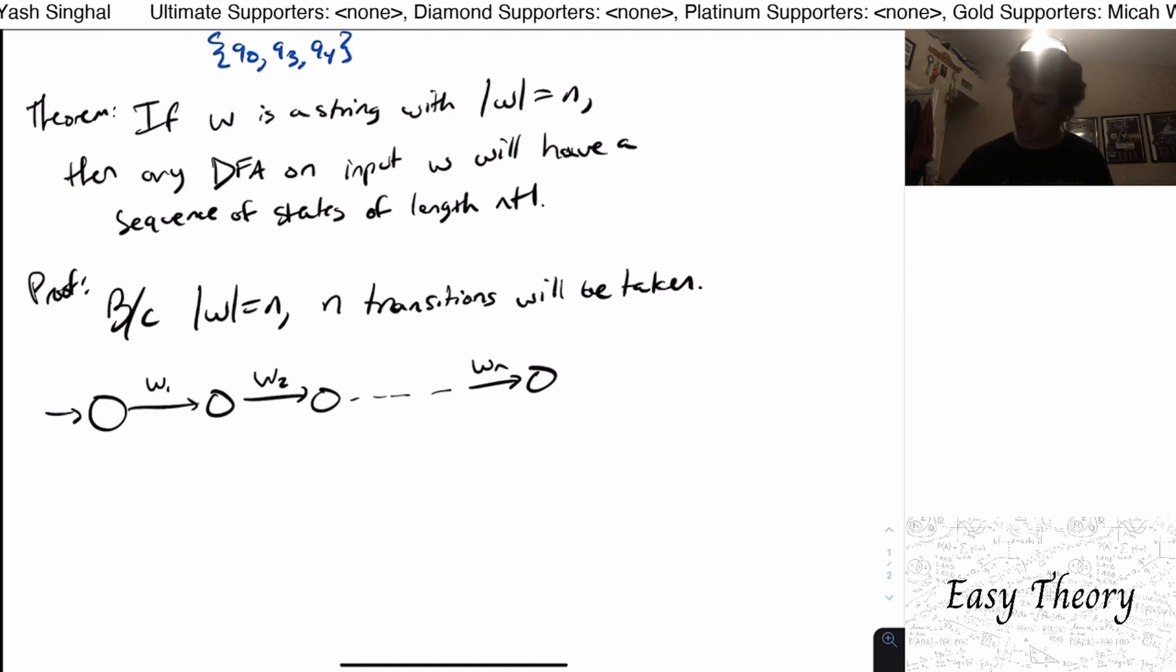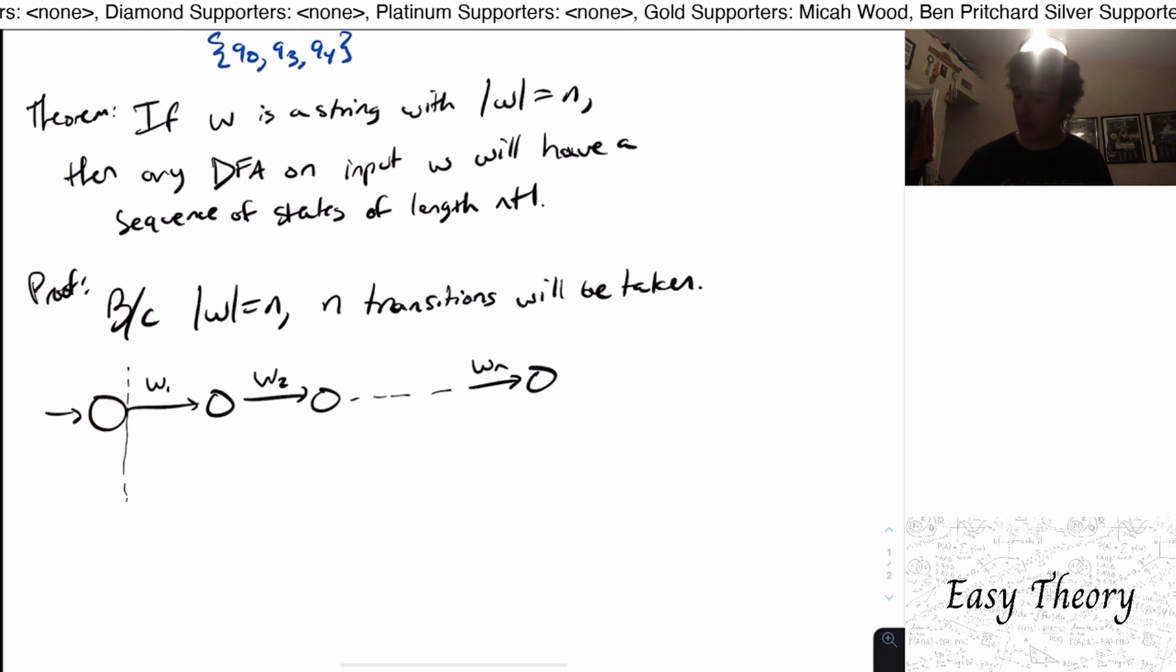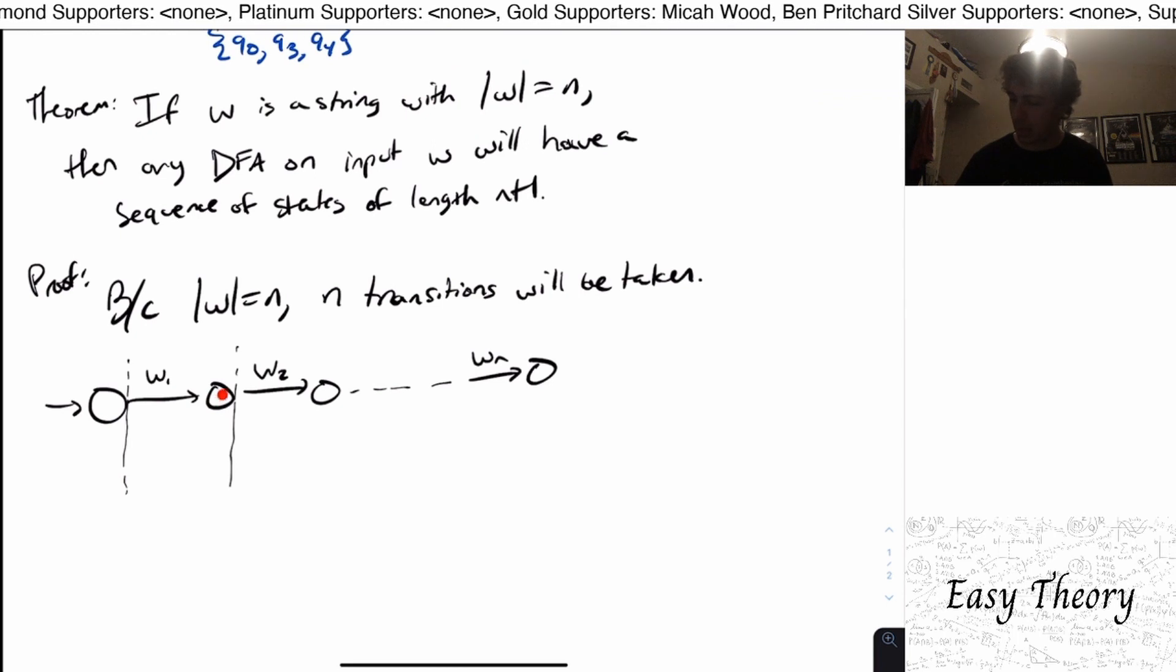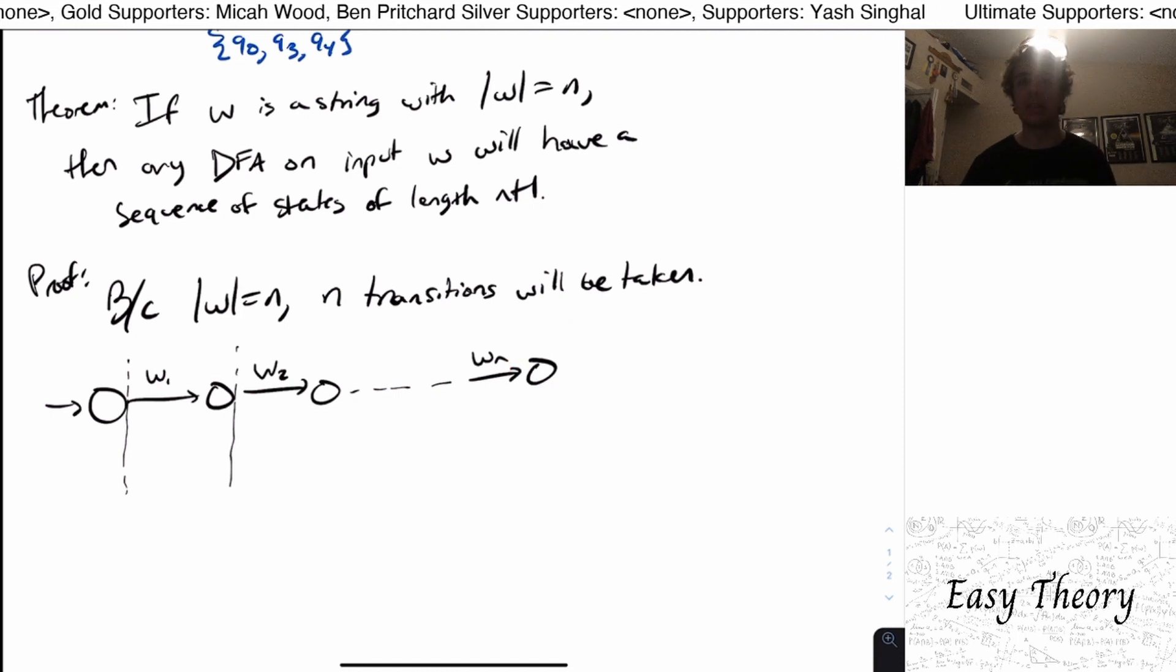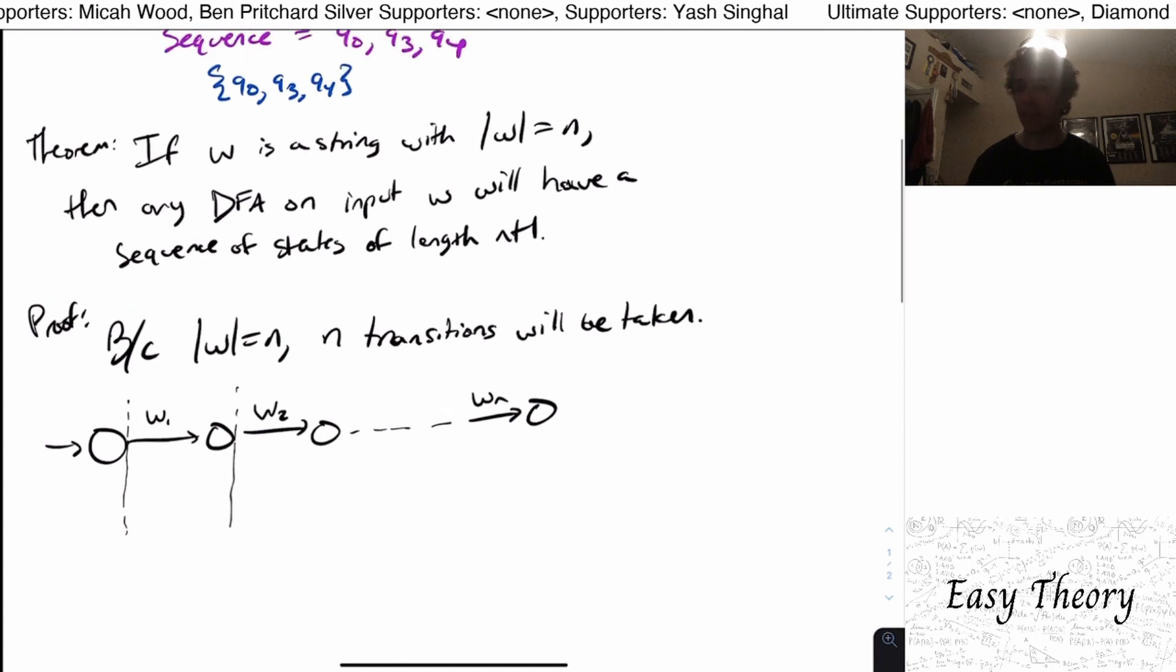Why? Because if I just cut this off right here, before we've read any characters at all, we have seen one state. And then if I cut it off here instead, well, that here we've seen two states in the sequence of states, but we've only read one character. And by induction, if I cut it off at the end, that means that we have read n characters, and therefore, we have seen n plus one states.